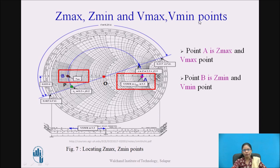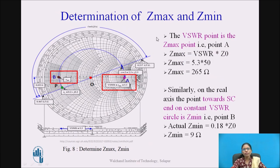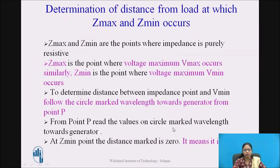To find Zmax and Zmin and the Vmax and Vmin points: when drawing the constant VSWR circle with center O and radius OP, the point towards the open circuit side is point A — this is the Zmax or Vmax point. The point towards the short circuit side is point B — this is the Zmin and Vmin point. Reading the Rn value at point A is 5.3, multiplied by Z0 of 50 gives Zmax of 265 ohm. Reading at point B and multiplying by Z0 gives Zmin of 9 ohm.